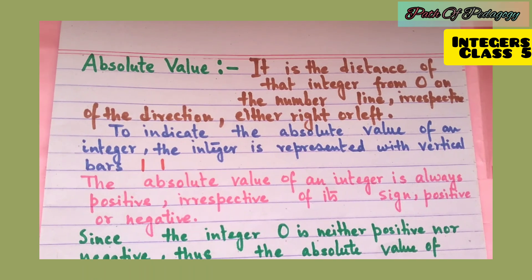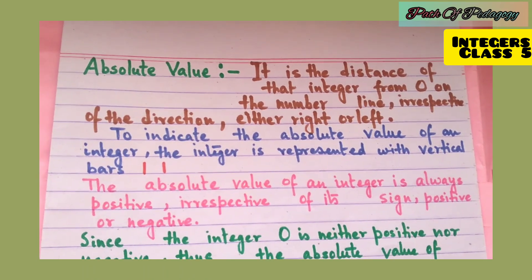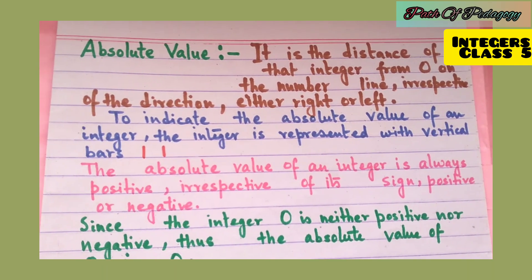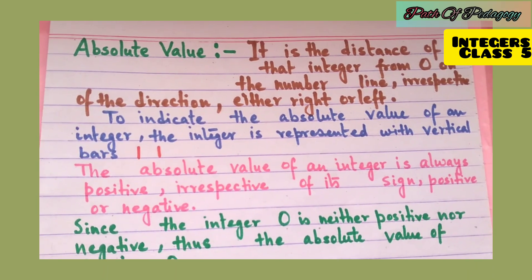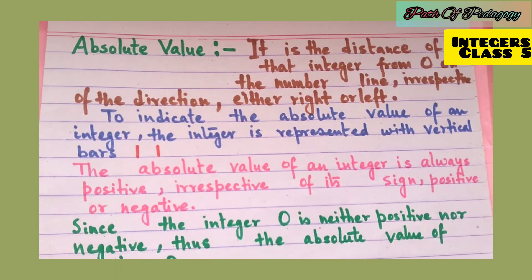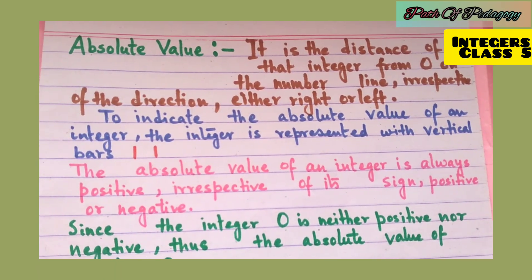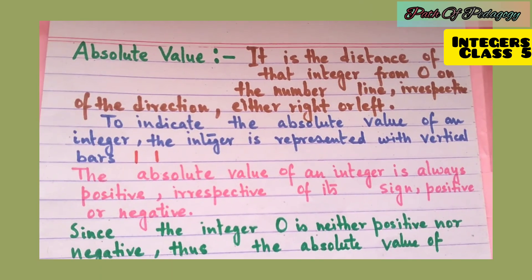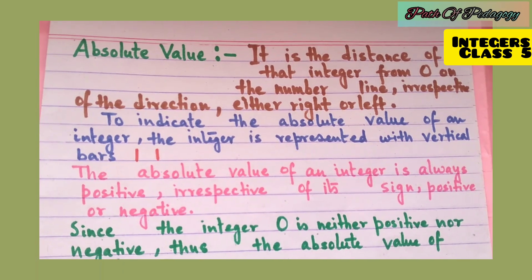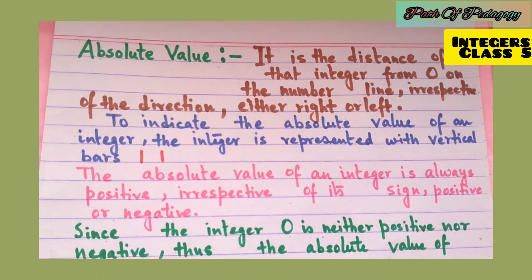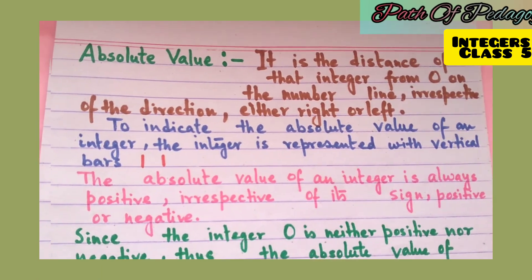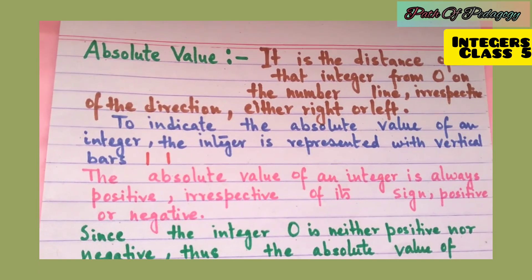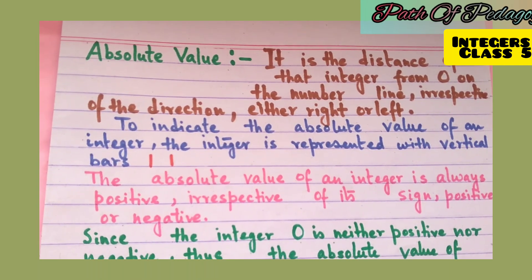In today's video we will first learn absolute value. Absolute value is the distance of that integer from 0 on the number line, irrespective of the direction — either right or left. Basically, absolute value is determined by observing the distance of any particular given integer from 0 on the number line.